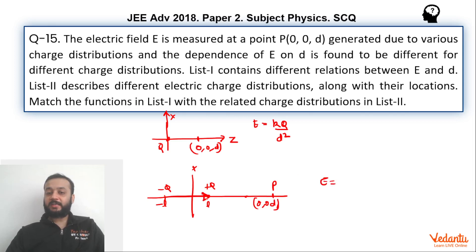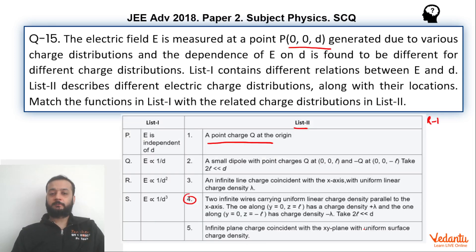We can understand that this will be the dipole moment and the electric field at this point. So this point will become axial point for this dipole. And the formula for the electric field at an axial point for a dipole is 2Kp by R cube. So this will be 2 into K into P, P will be dipole moment which will be Q into 2L, 2Kp by R cube. R will be this distance which is nothing but d cube. So we can say that electric field is proportional to 1 by d cube. So Q matches with S.